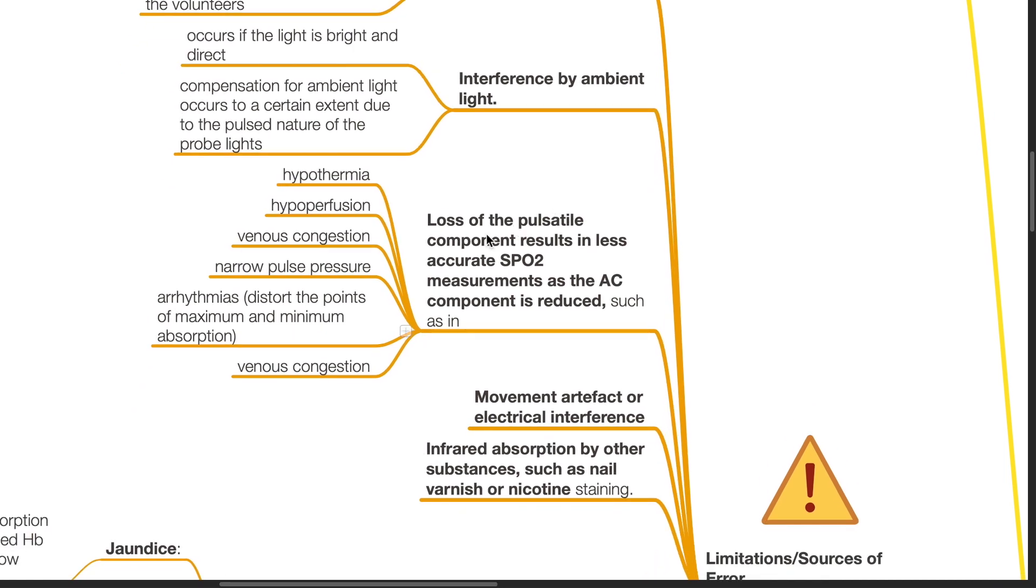Loss of the pulse oximetry component results in less accurate SpO2 measurements as the AC component is reduced, such as in hypothermia, hypoperfusion, venous congestion, narrow pulse pressure, arrhythmia which distorts the point of maximum and minimum absorption, and the use of arterial tourniquets and BP cuffs which causes hypoperfusion as well.